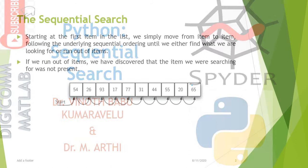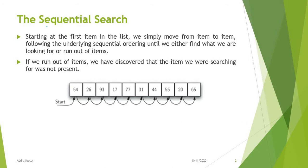Sequential search is the very basic search. We have a sorted or unsorted array and we want to search a certain item. For example, in this unsorted array, I want to search 77. I will start the search from the first item, and if it is not that item, I will search in the second, third, fourth position and so on. I will repeat this until I find the particular key, or in the worst case, I may go up to the last position, and even then the item may not be found.